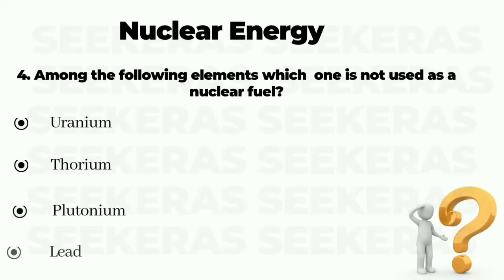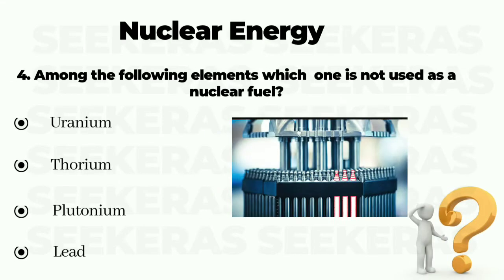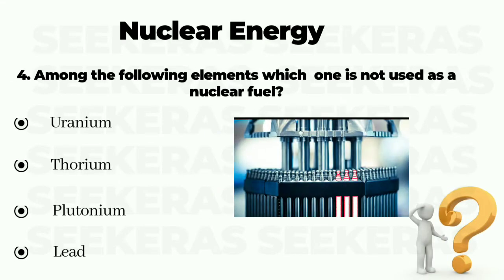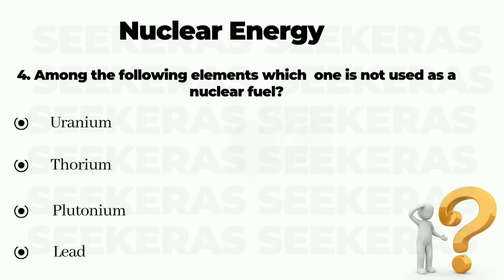Question number 4. Among the following elements, which one is not used as a nuclear fuel? Option A uranium, option B thorium, option C plutonium, and option D lead. The correct answer is option D, lead.